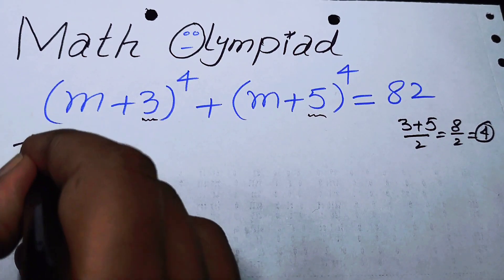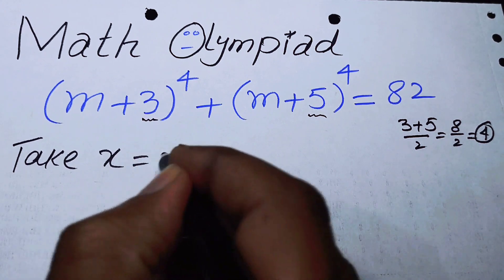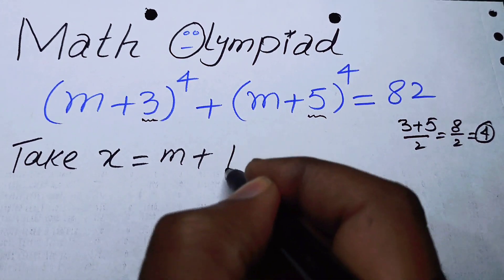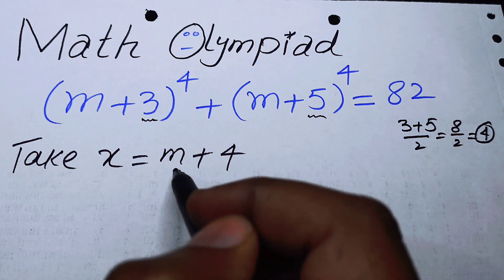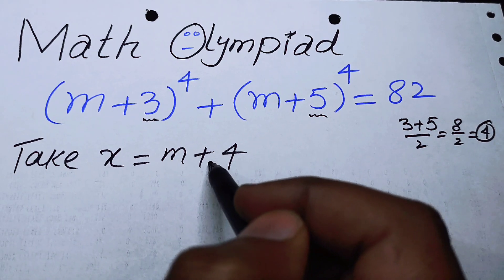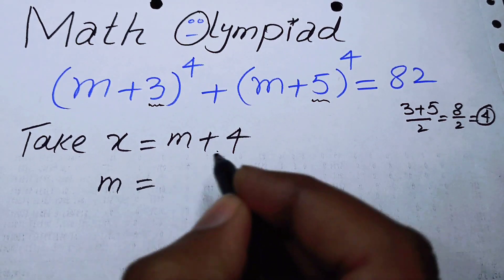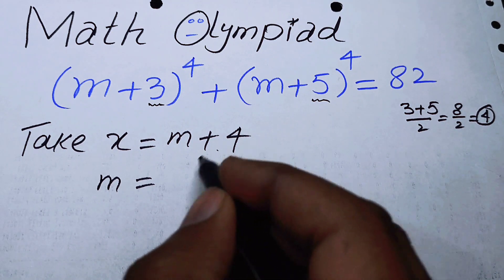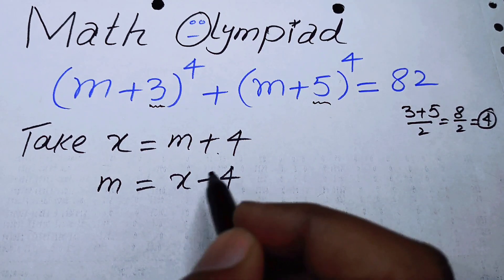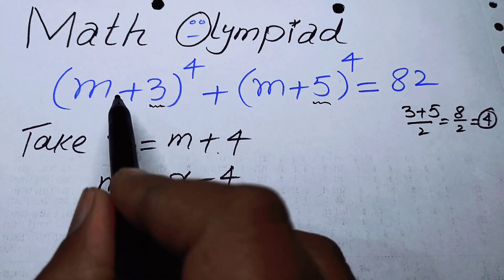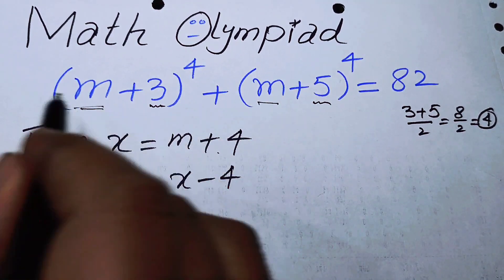Now we take X equal to m plus 4. Since we have mean 4, we take X equal to m plus 4, and here we can find the value of m. So m is equal to X minus 4. We can substitute m = X - 4 into the terms.